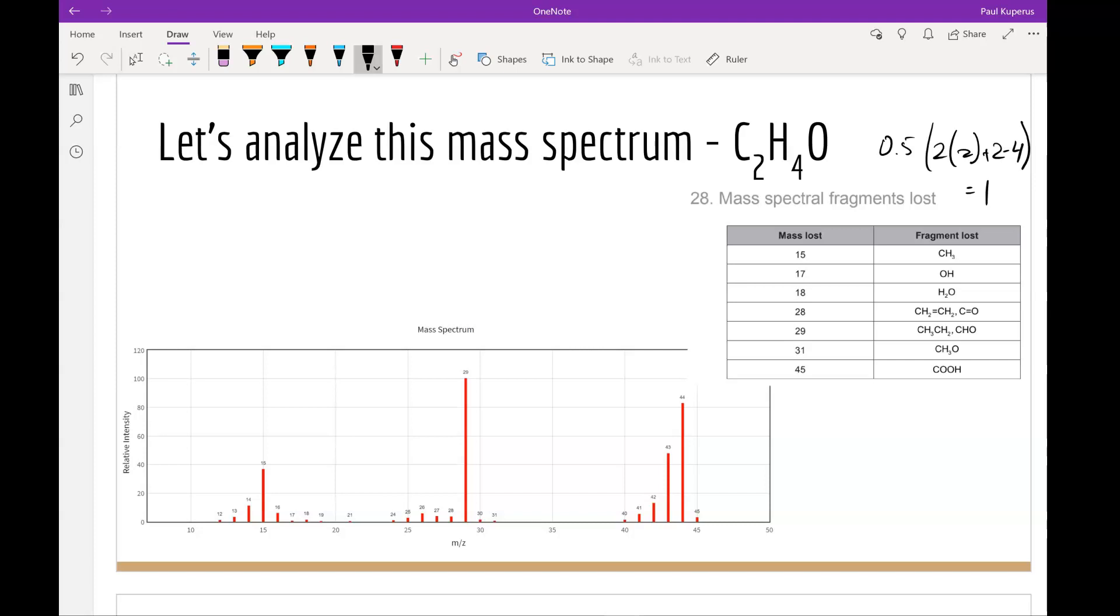Now we see some peaks here. The first one we want to highlight is the largest peak at the end of the spectrum. This will correspond with the molar mass of the compound. If we look at the compound 12 for carbon plus 4 for hydrogen plus 16 for oxygen gives me a total of 44. And we see our largest peak at the end of our spectrum molar mass is equal to 44. So that corresponds very nicely.